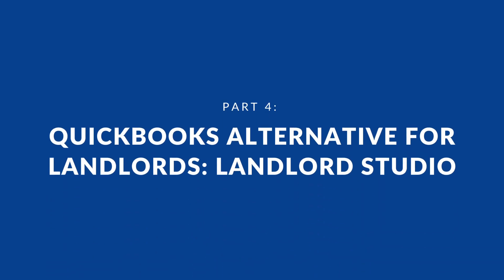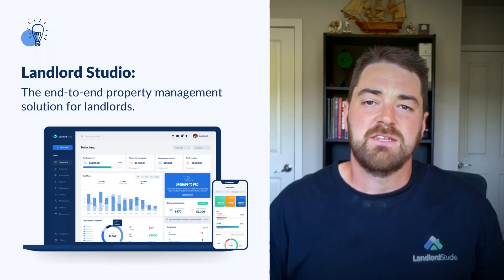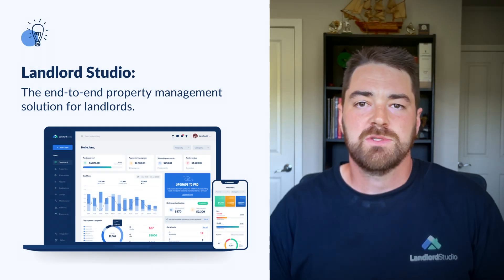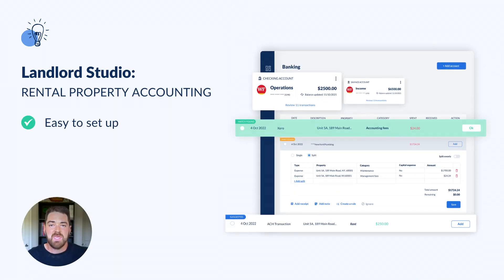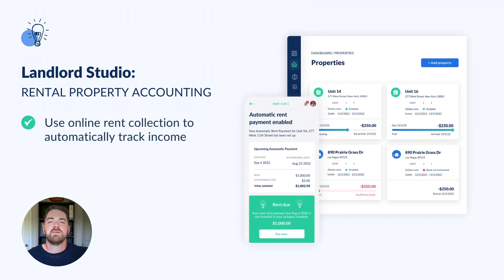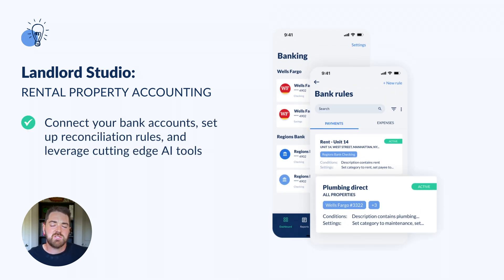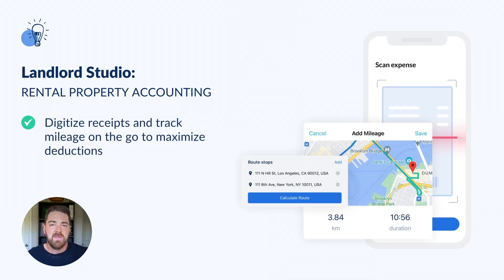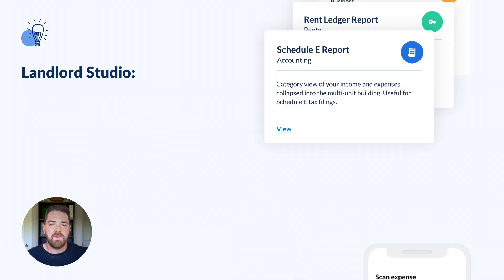That's where Landlord Studio comes in. Landlord Studio is a property management and full-stack accounting tool purpose-built for landlords. With an easy-to-use mobile app, it takes only minutes to set up. Default expense categories align with IRS requirements and Schedule E, and features like online rent collection automate income tracking for you. You can connect your bank accounts through bank feeds, import transactions, even use AI-powered tools for faster reconciliation, and digitize receipts with smart receipt scan. You can also use the built-in GPS mileage tracker to maximize deductions on vehicle usage. At the end of the month, instantly generate over 20 accounting-approved customizable reports, including a specialized Schedule E report that breaks down your expenses by category and by property.